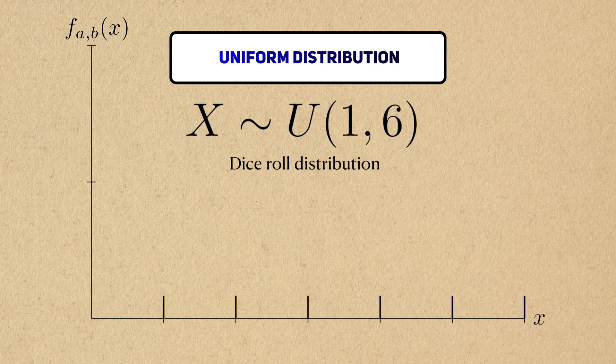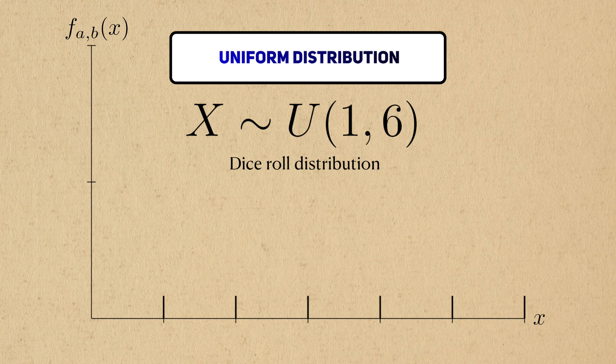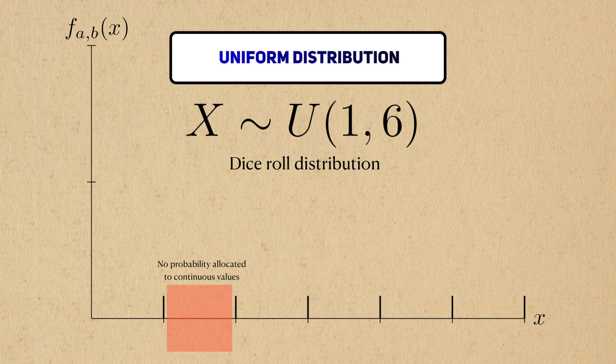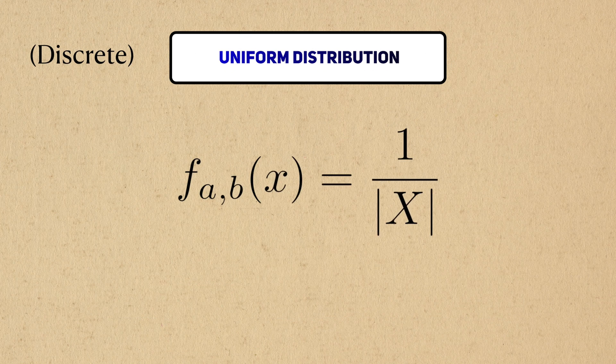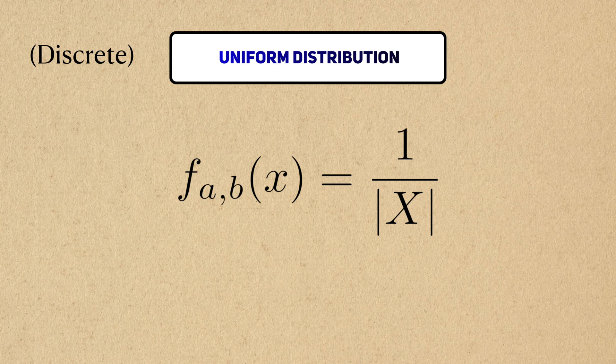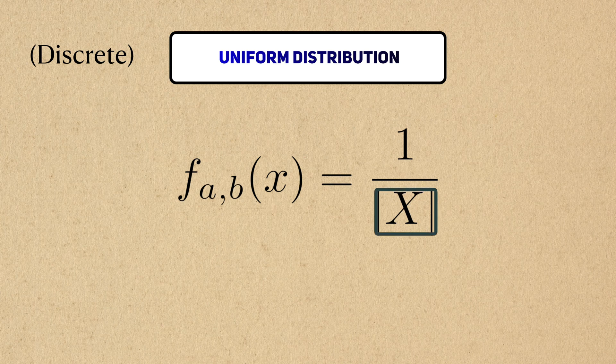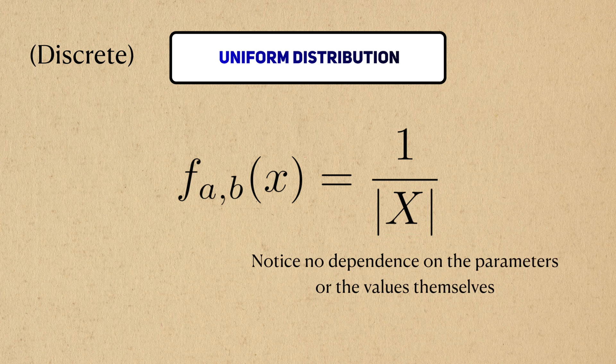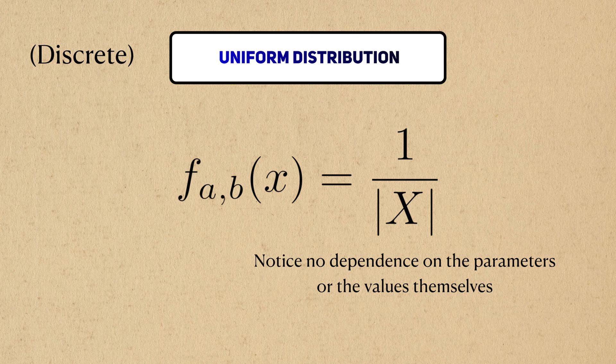The dice roll is an example of a discrete uniform distribution. The minimum is 1, and the maximum is 6. Decimal values are not possible in a six-sided die, so no probability is given to them. For a discrete uniform random variable, the probability distribution looks like this. This value in the denominator denotes the number of all possible values that the random variable can take. Each of these values will be given the same probability.